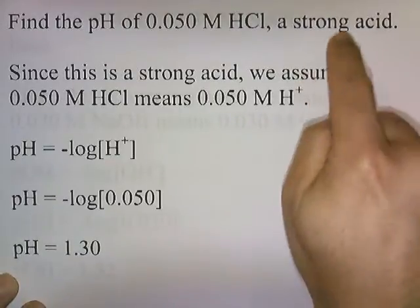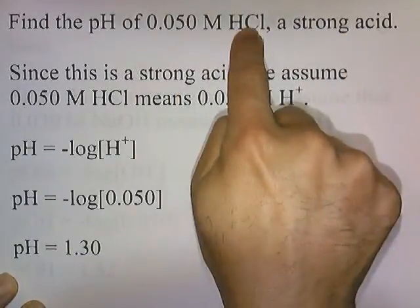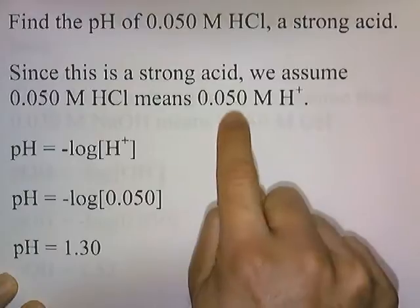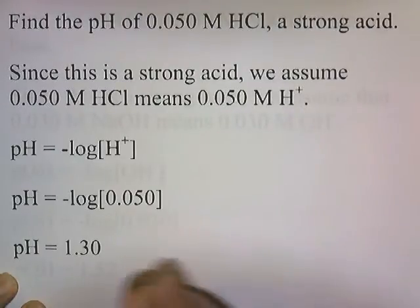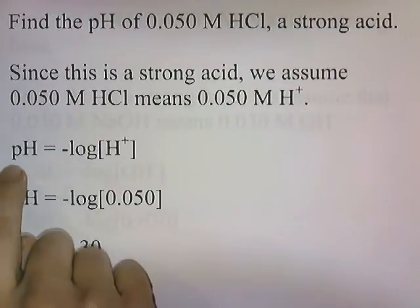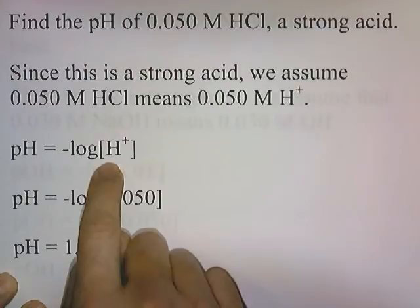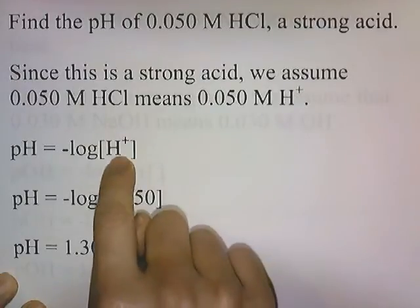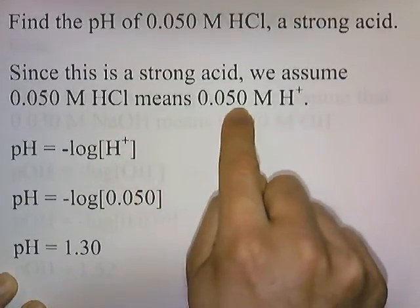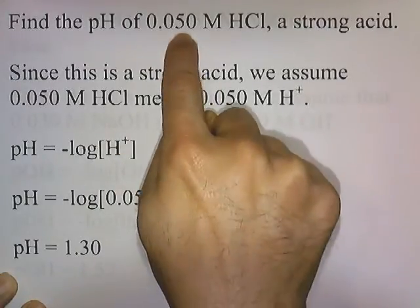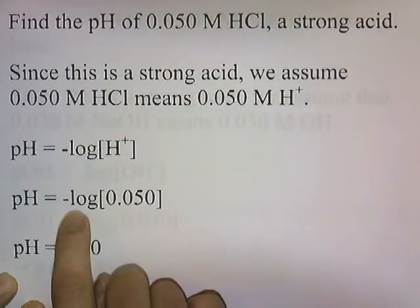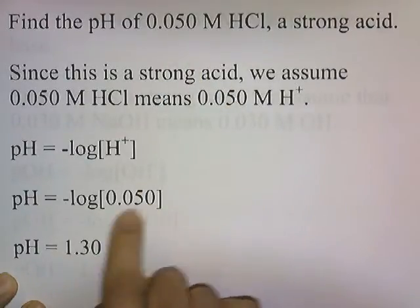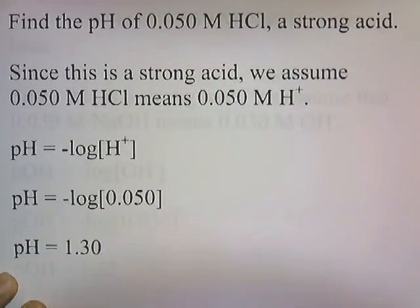For a strong acid, the concentration of the acid is the concentration of the hydrogen ion. So our formula is pH equals negative log of H⁺. The concentration of H⁺ is 0.05, since the concentration of the acid is 0.05. The log of this number times negative 1 gives you 1.30.